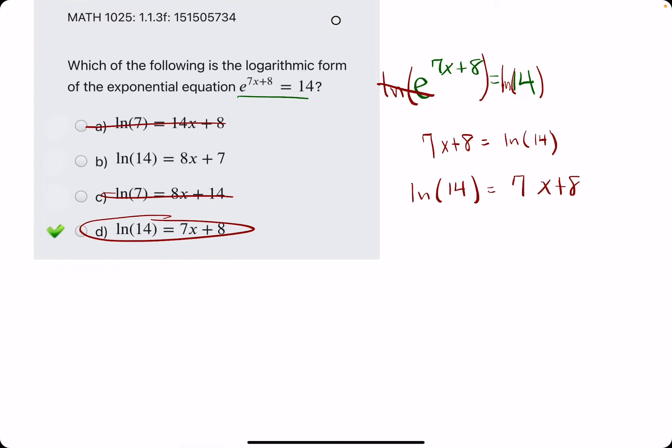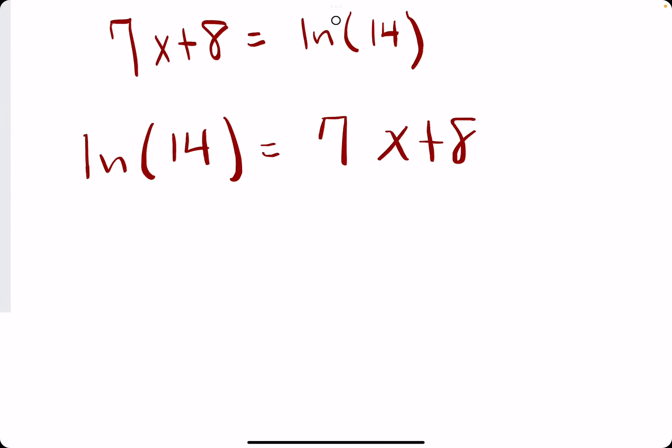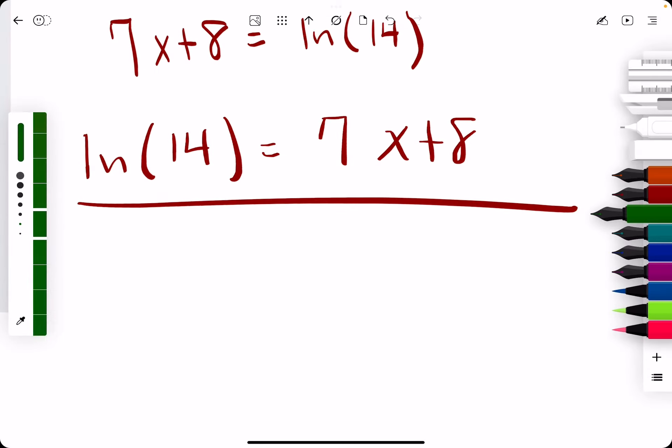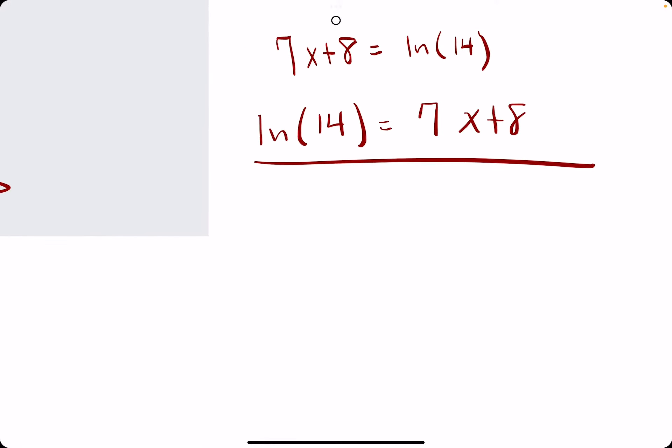In the case that you are actually given a logarithmic form first, so say we started with this and they say convert it to exponential form, it would be just the opposite. We would make e the base of both sides. And so what would happen is e and ln again would cancel and it would leave us with 14 on the left side.